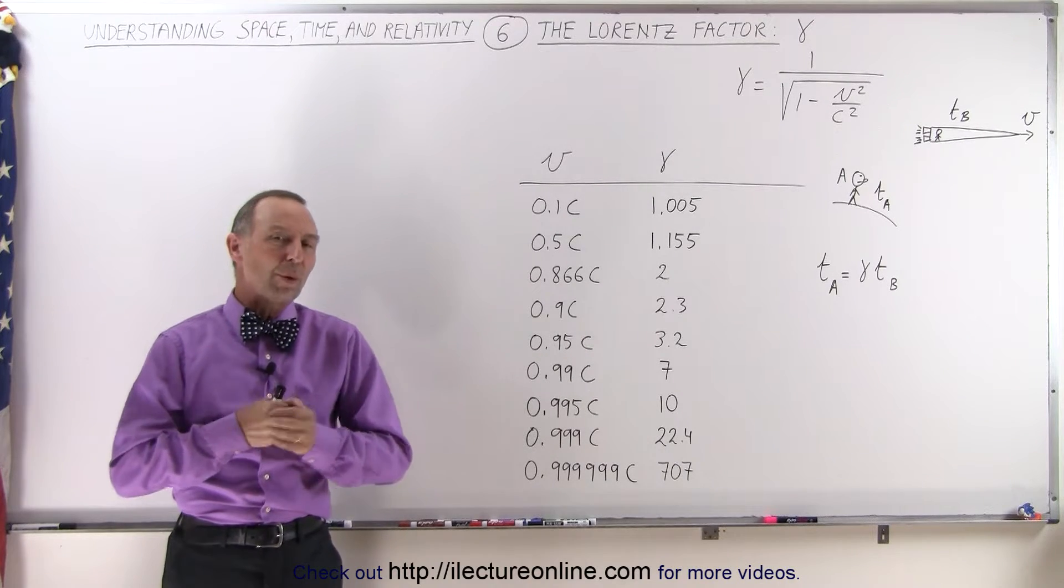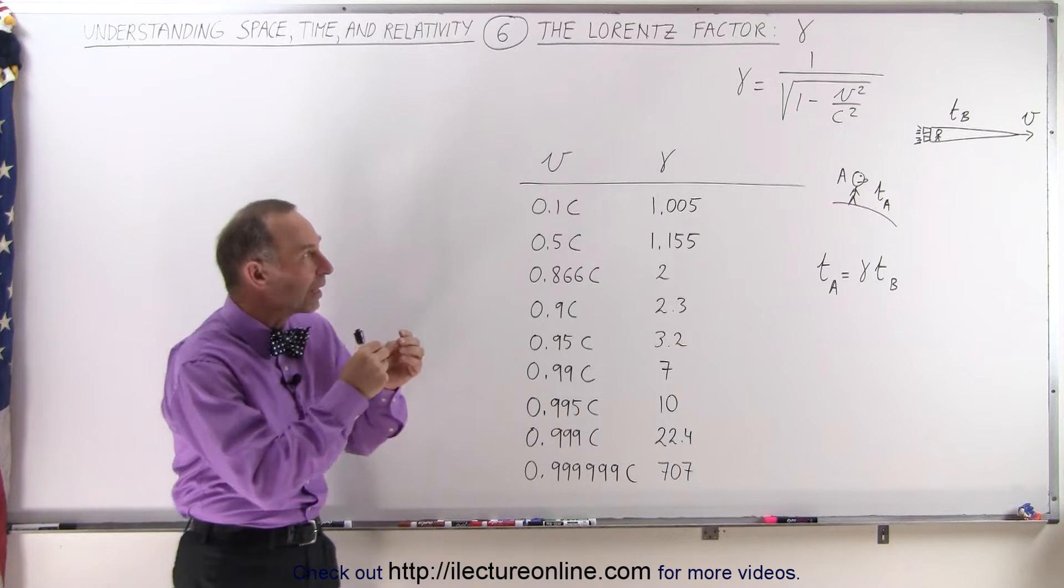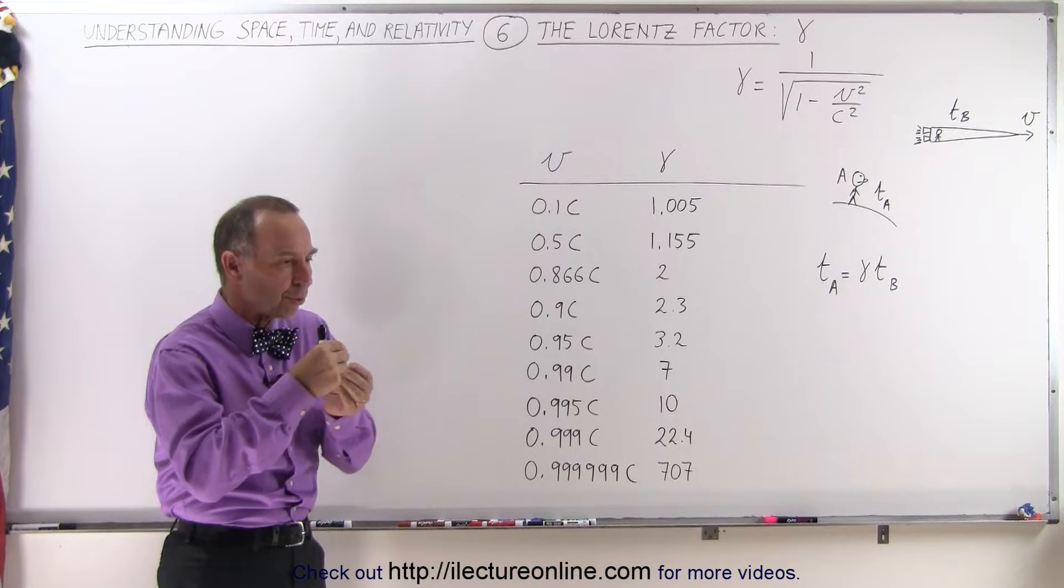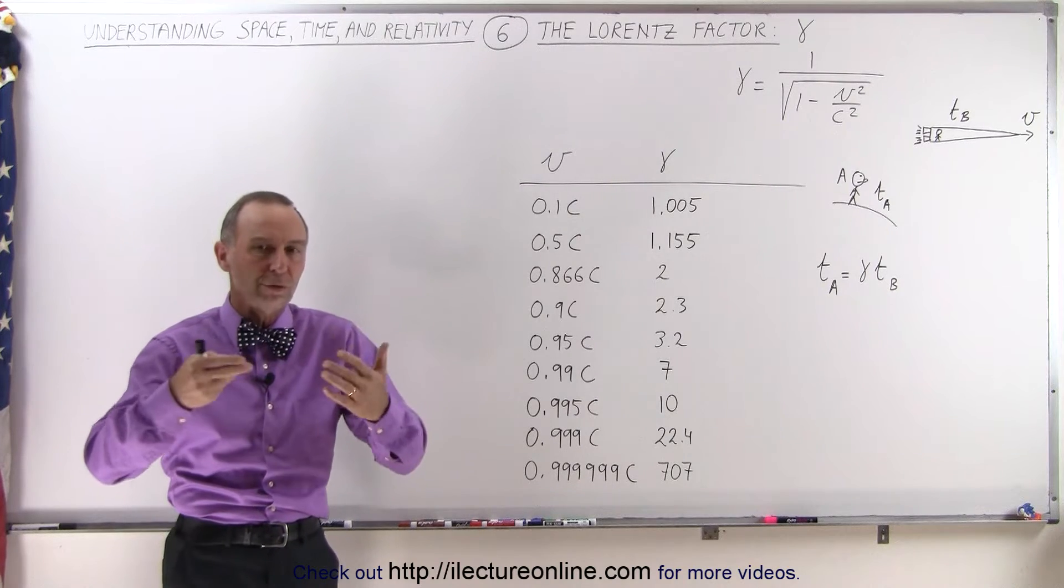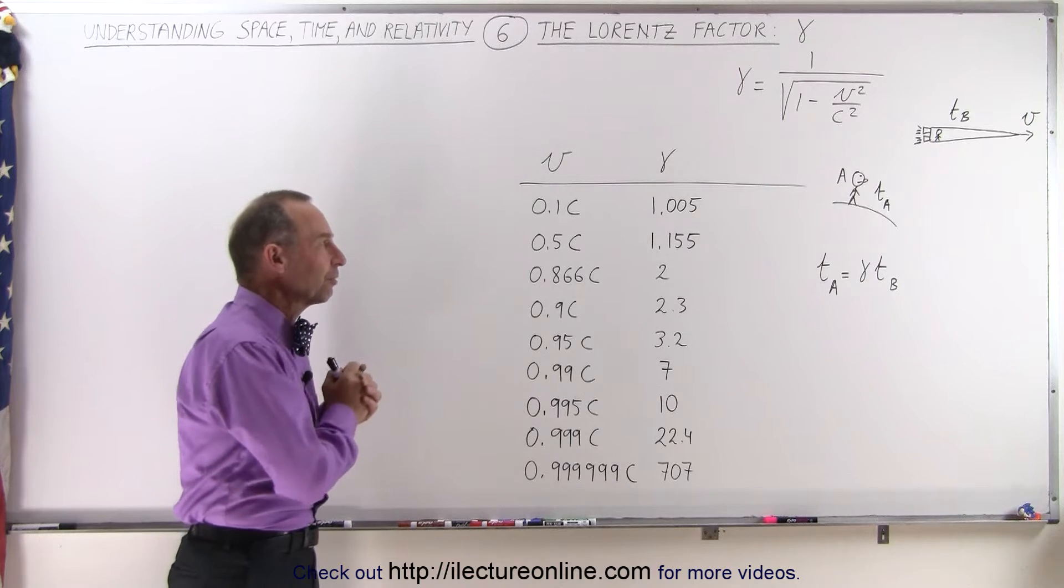Welcome to our lecture online. When we're dealing with the special theory of relativity, we began to realize that there is a factor that we multiply times the time, or the mass, or the length that we observe from one reference frame in respect to another reference frame.